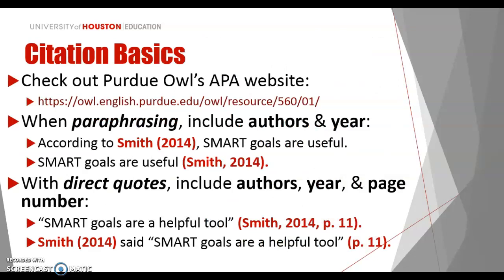Some basic citations — check out the OWL Purdue APA website for the most current guidelines, but in general these things have stayed the same. When you're just paraphrasing someone's thoughts, you'll use the author and the year. So you might say, 'According to Smith (2014), smart goals are useful.' Or you might just go ahead and paraphrase — say 'Smart goals are useful' — and then cite where you got your ideas from. Stylistically, I've found the second approach sounds better.